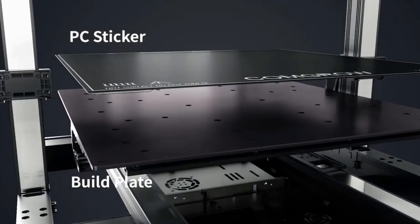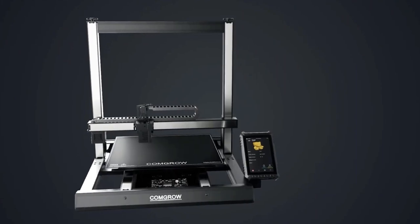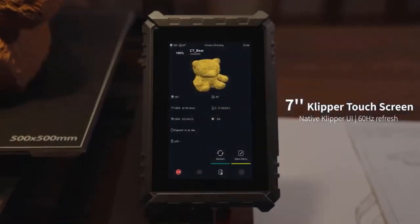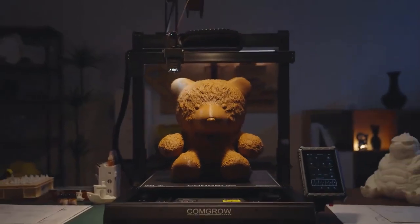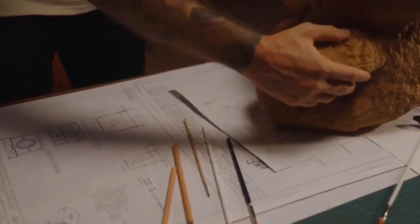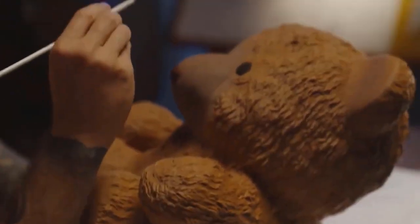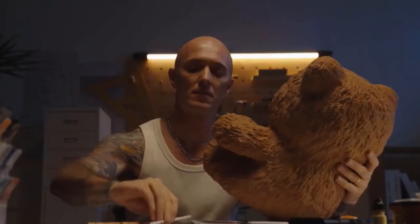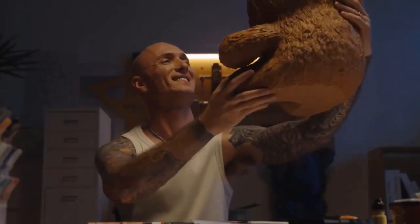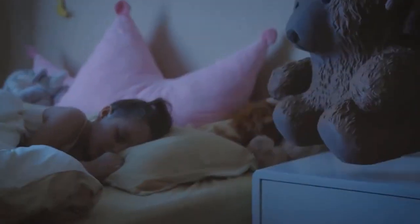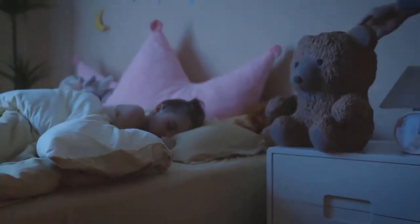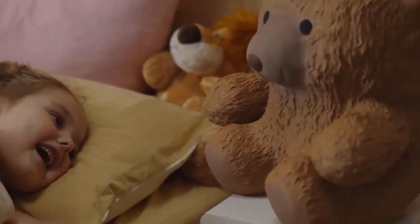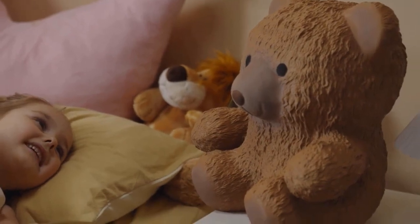Larger build volume, Comgrow T500 3D Printer can print 19.68 x 19.68 x 19.68 inches large size models, enabling you to bring grand scale projects to life with exceptional finesse. Also you can reach batch production on the large printing area in one time, saving your time to wait for the models.